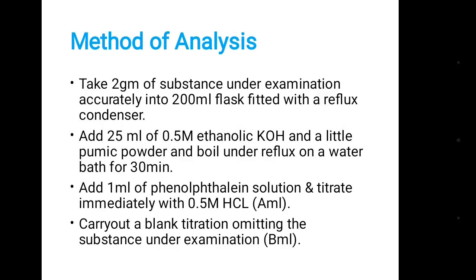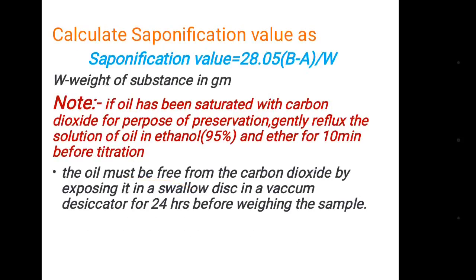Carry out a blank titration omitting the substance under examination. Calculate saponification value as: Saponification value = 28.05 × (volume consumed by blank − volume consumed by sample) ÷ weight of substance in grams.